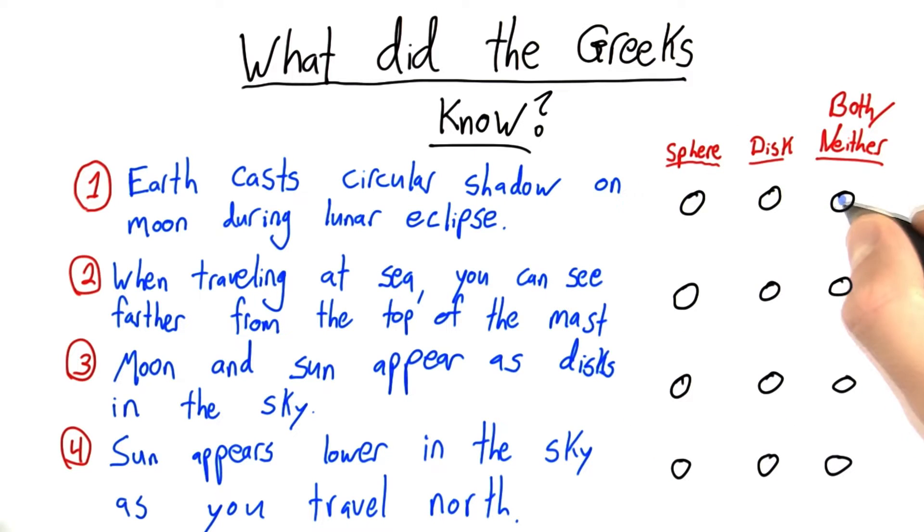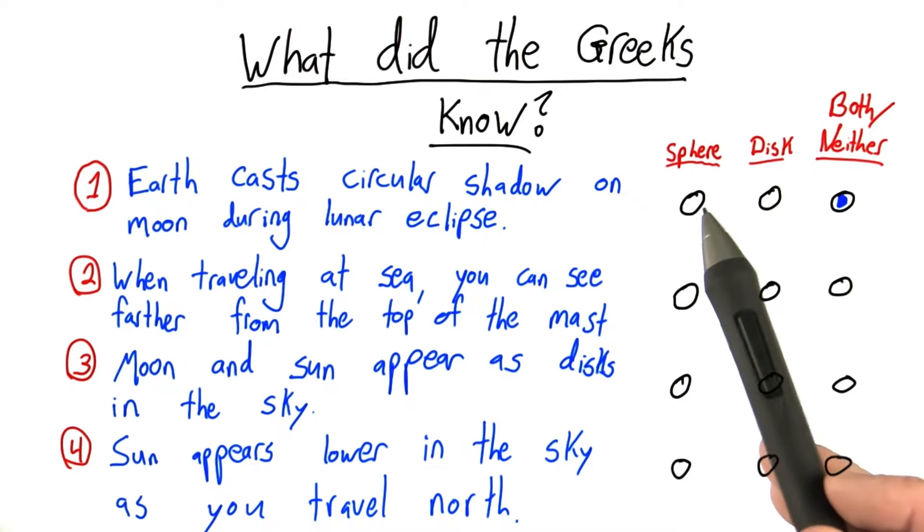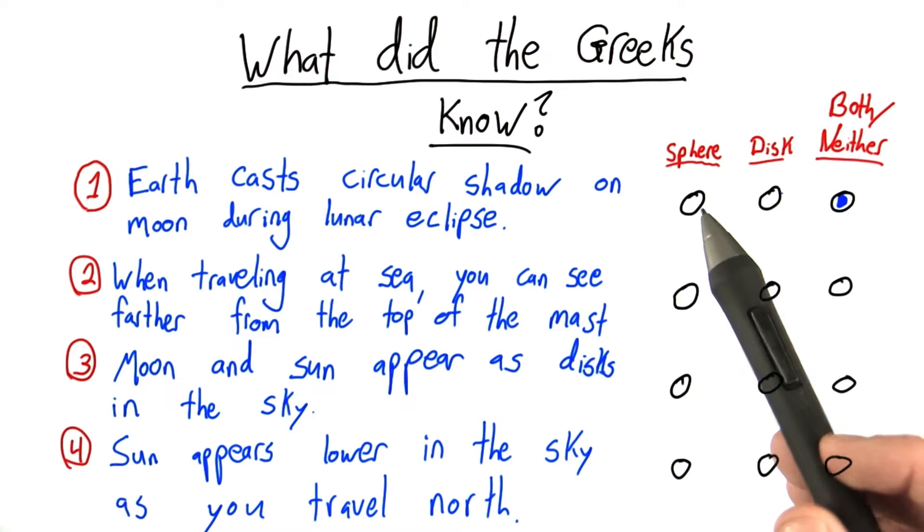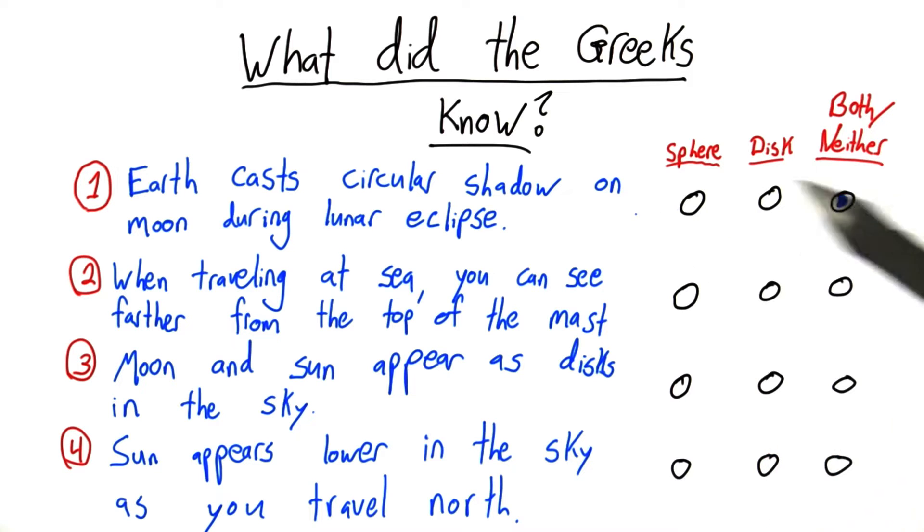For this first option, I said it could support both of these theories. I could imagine a disk casting a circular shadow on the moon, and I could also imagine a sphere. Now, if you chose sphere, you have a good reason to argue with me. Because if the Earth were disk-shaped, it would be a pretty huge coincidence of the alignment of that disk for it to actually cast a circular shadow. Think about this one a little more if that wasn't clear, and we can talk about it in the forums.